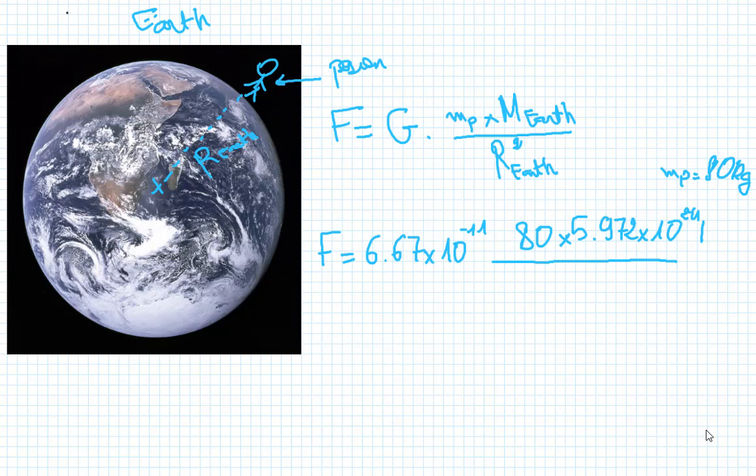Divided by the distance, which is the radius of Earth squared. The radius of Earth is 6.3781 times 10 to the power 6, all of that squared.